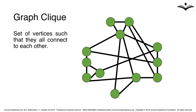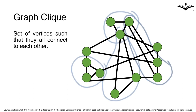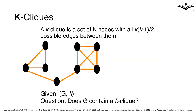GraphClique is a set of vertices such that they all connect to each other. A KClique is a set of K nodes with all possible edges connected between them. The question is: given a graph and a K, does the graph contain a KClique?